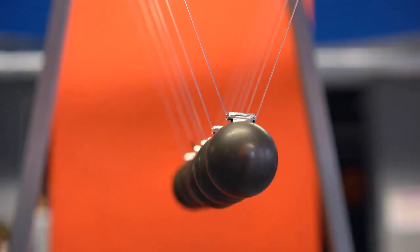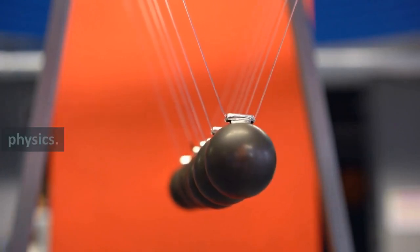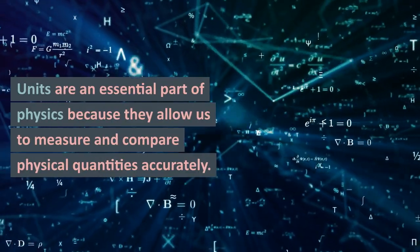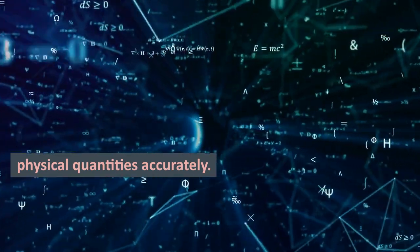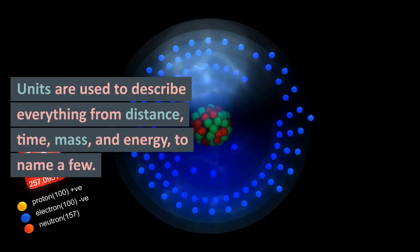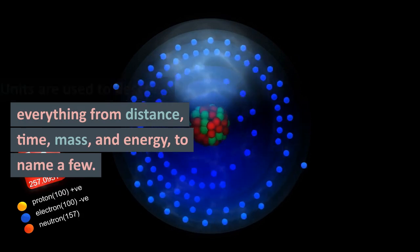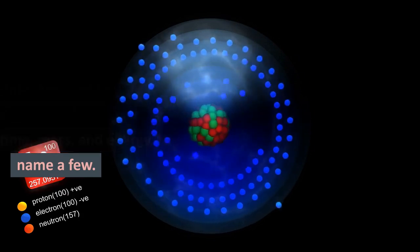Units in physics. First, let's talk about units in physics. Units are an essential part of physics because they allow us to measure and compare physical quantities accurately. Units are used to describe everything from distance, time, mass, and energy, to name a few.